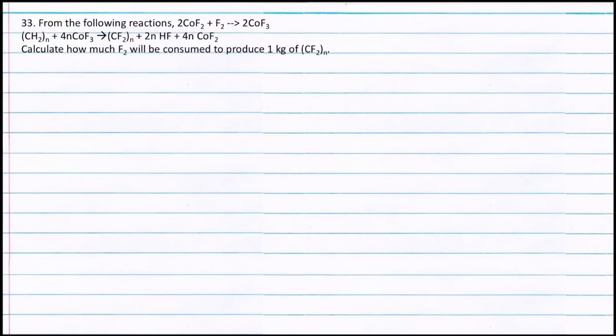Question 33. From the following reactions: 2 moles of COF₂ plus 1 mole of F₂ forming 2 moles of COF₃; and 1 mole of (CH₂)ₙ plus 4n moles of COF₃ forms (CF₂)ₙ plus 2n moles of HF plus 4n moles of COF₂. Calculate how much fluorine will be consumed to produce 1 kg of (CF₂)ₙ.